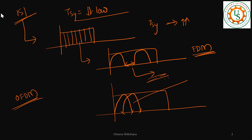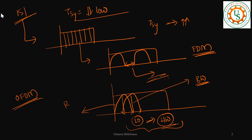Because the sub-bands are orthogonal, we can pack more sub-bands within the existing bandwidth, giving greater advantages. However, implementing these sub-bands in hardware required multiple local oscillators, which is costly and bulky. So we introduced a mechanism to perform these operations in the baseband using IFFT, as explained in previous videos.